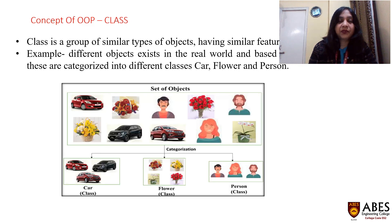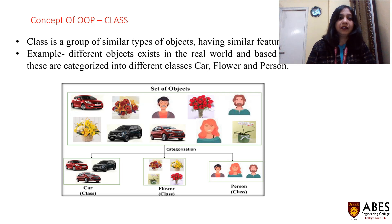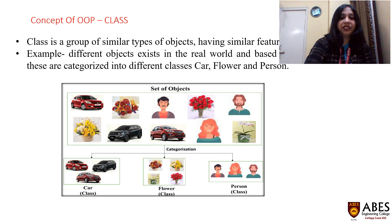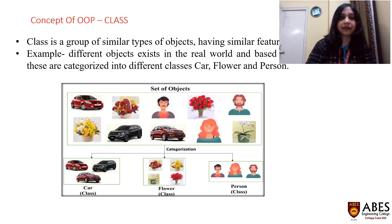The second feature of object-oriented programming is class. Class is a group of similar types of objects having similar features. Different objects in the real world are categorized into different classes. As shown in the diagram, we have cars, flowers, and human beings — we can categorize these into similar classes. We can make one class for the car, a second class for the flower, and a third class for the person, keeping similar types of objects together.